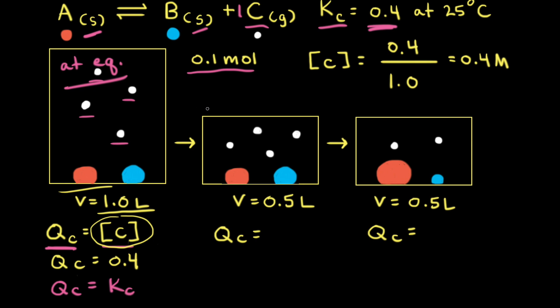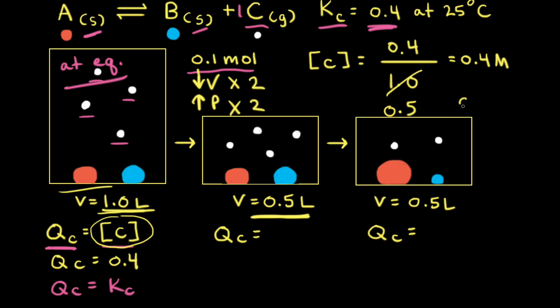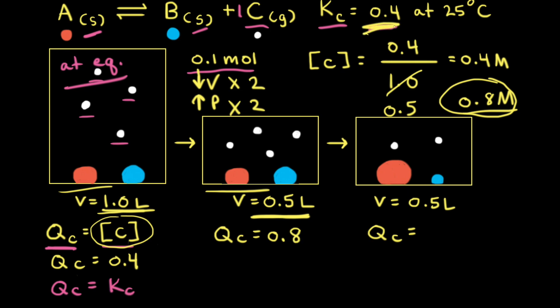Next, we think about the stress applied to the reaction at equilibrium — we decreased the volume from 1.0 liters to 0.5 liters, decreasing it by a factor of two, which causes an increase in pressure by a factor of two. Changing the volume also changes the concentration: instead of 0.4 divided by 1.0, it's now 0.4 divided by 0.5, which equals 0.8 molar — the concentration has doubled. So for our second particulate diagram, QC equals 0.8, and KC equals 0.4. Since QC does not equal KC, the reaction is not at equilibrium.